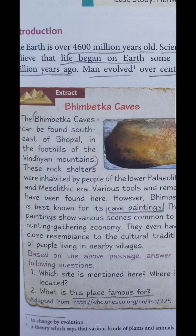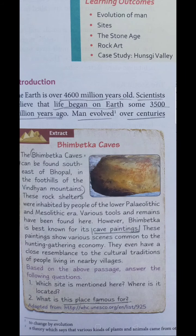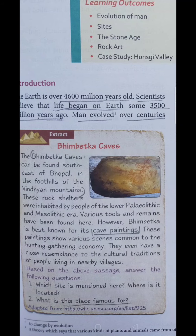So here just one extract is given. As you all are aware how to complete the extract — firstly you have to read the extract and after reading that you have to attempt the questions given below. The first question is: which site is mentioned here, where is it located? Bhimbetka's caves is definitely mentioned here. They can be found south-east of Bhopal in the foothills of the Vindhya mountains. The second one is representing what is this place famous for — definitely this place is famous for the cave paintings.